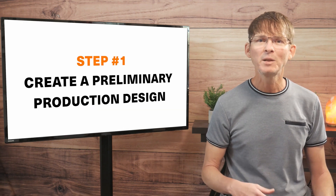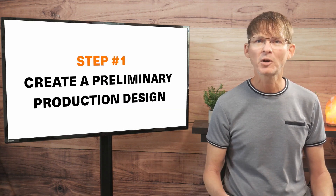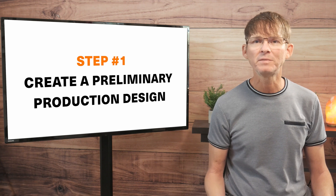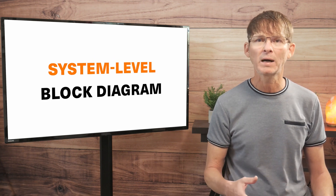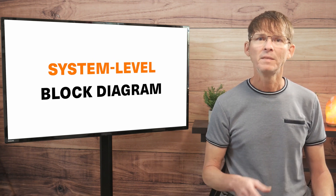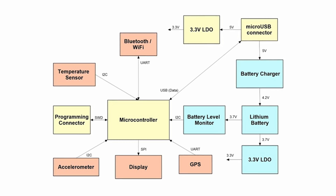When creating the preliminary production design, start by defining the system-level block diagram. This diagram specifies each electronic function and how all of the functional components interconnect.